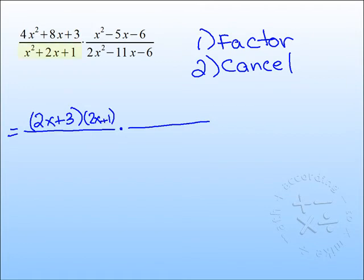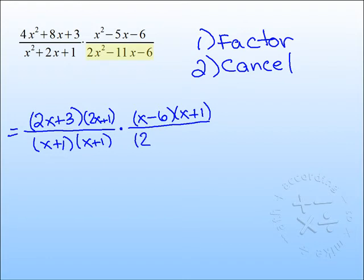x squared plus 2x plus 1 is a perfect square. That's going to be x plus 1, x plus 1. x squared minus 5x minus 6, that's going to factor as x minus 6, x plus 1. And lastly, 2x squared minus 11x minus 6, that's going to factor as 2x plus 1, x minus 6.